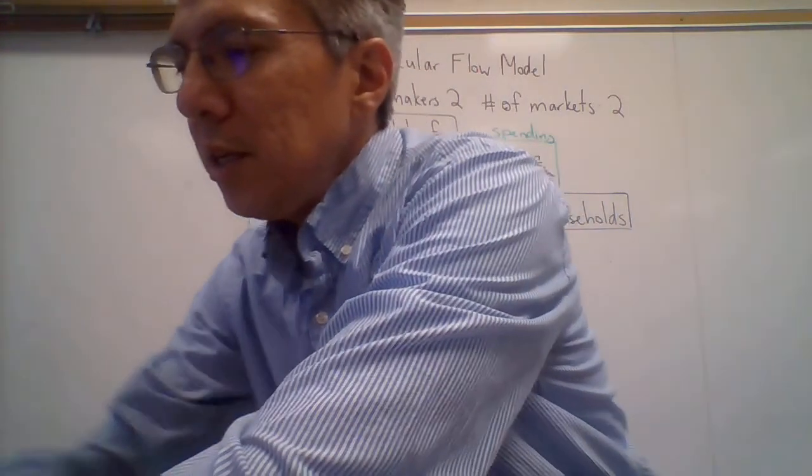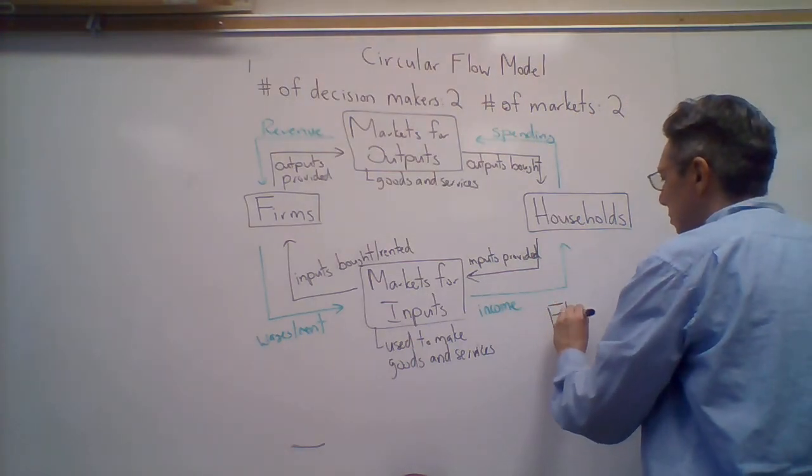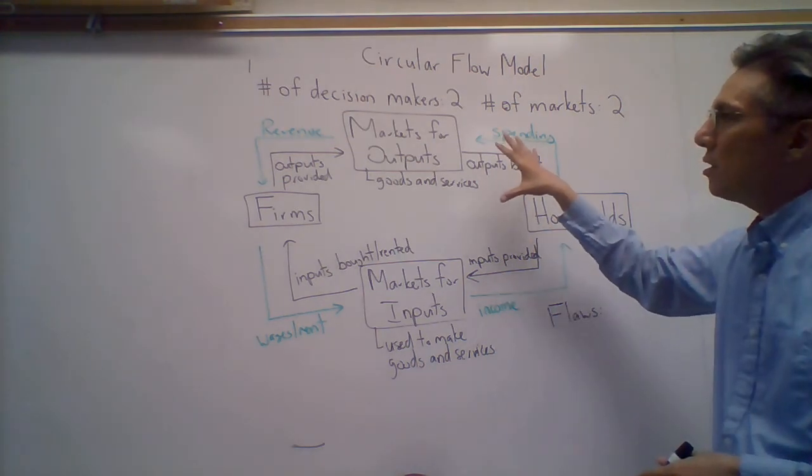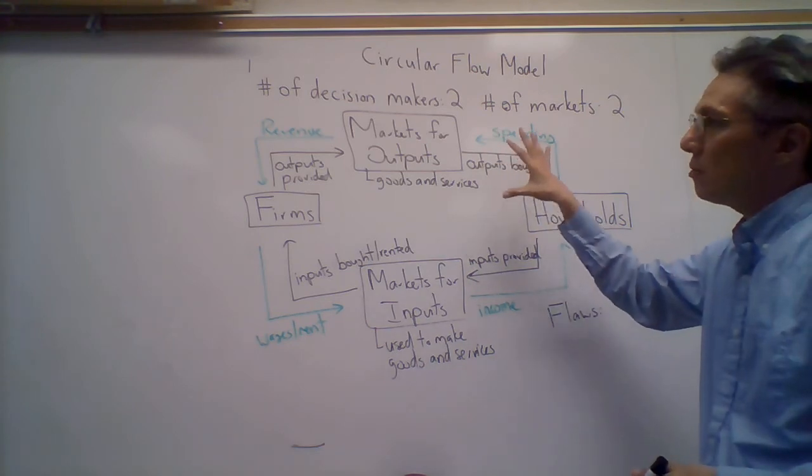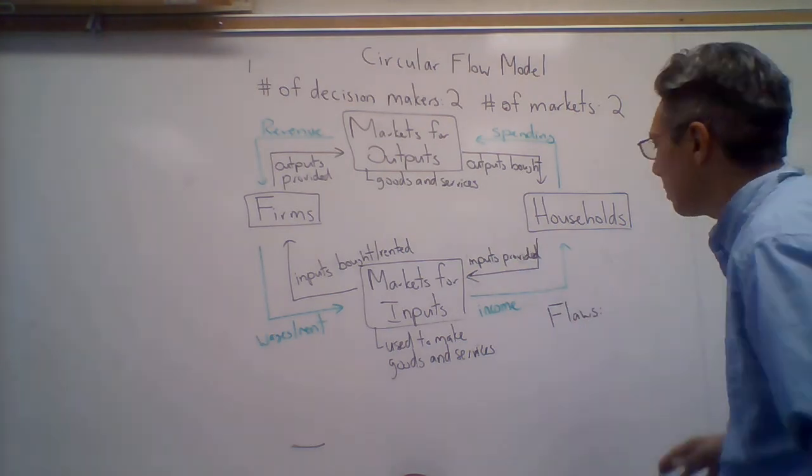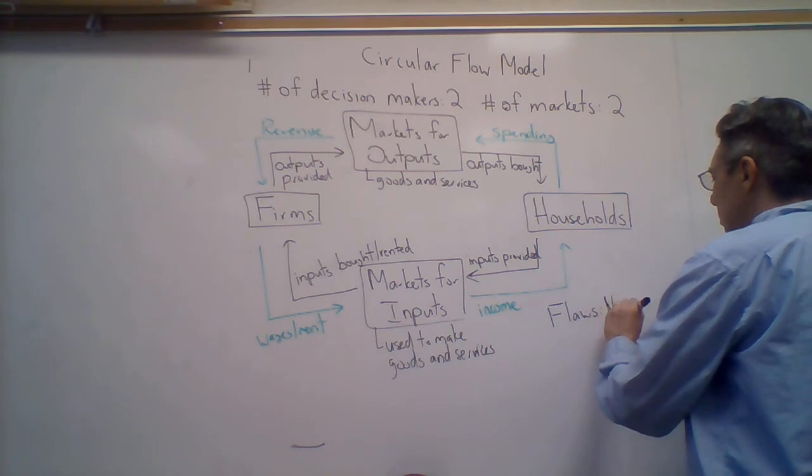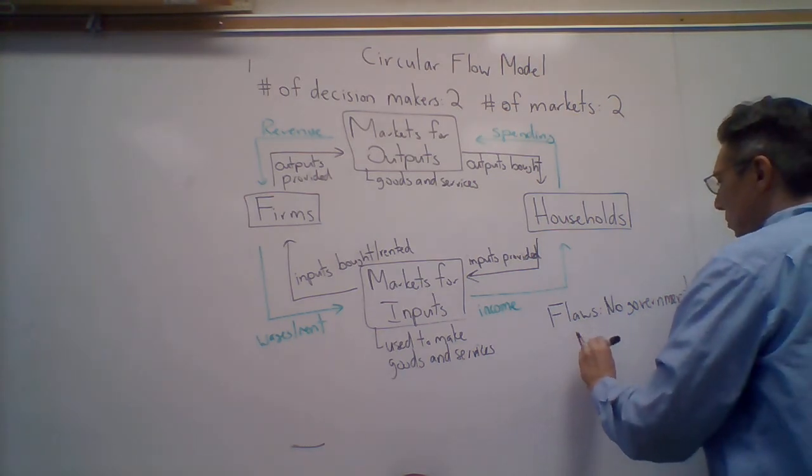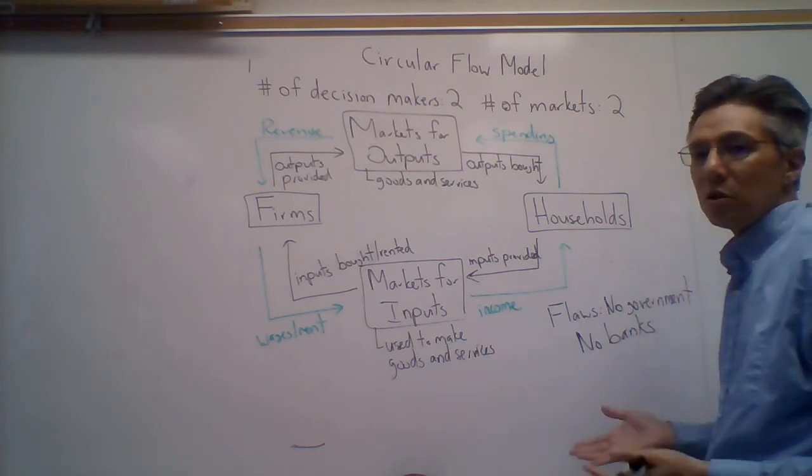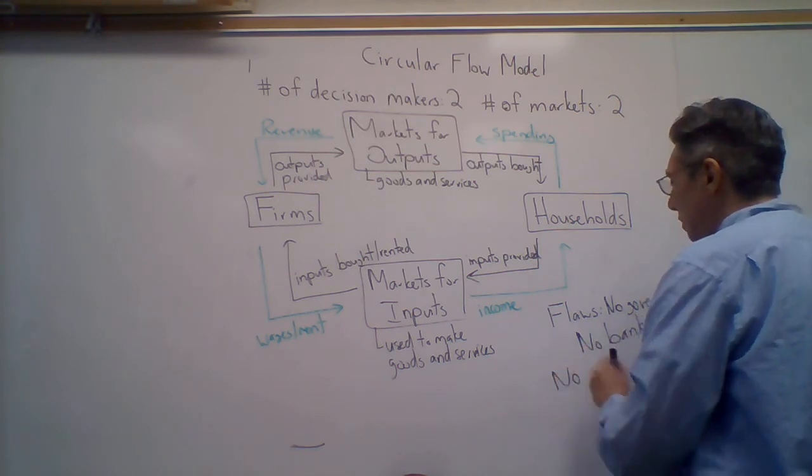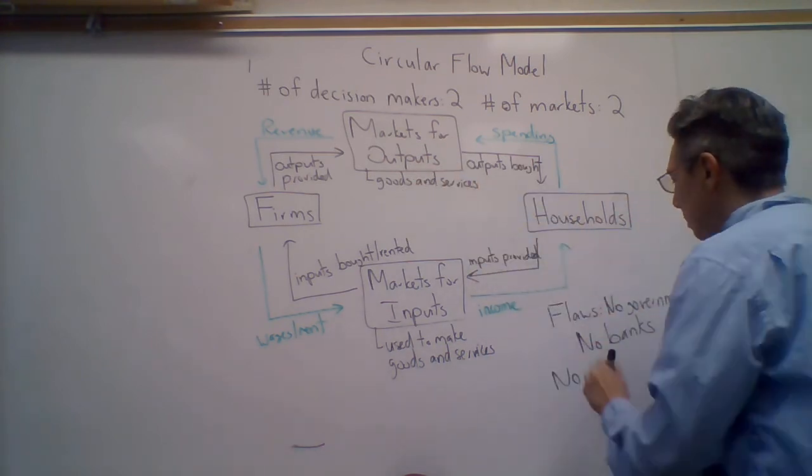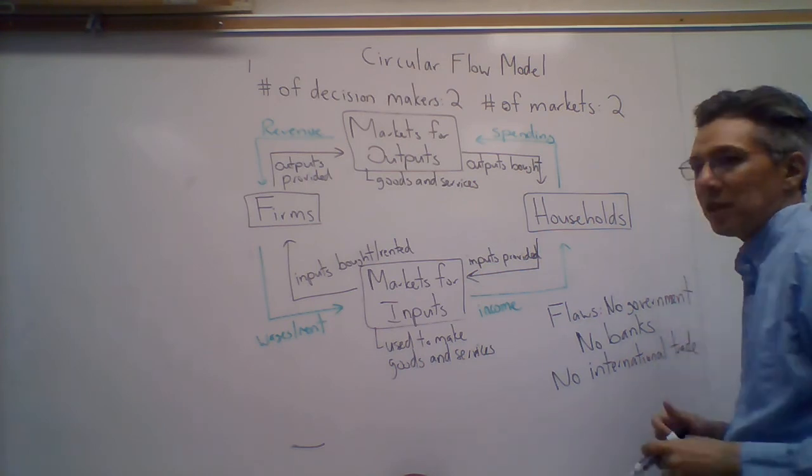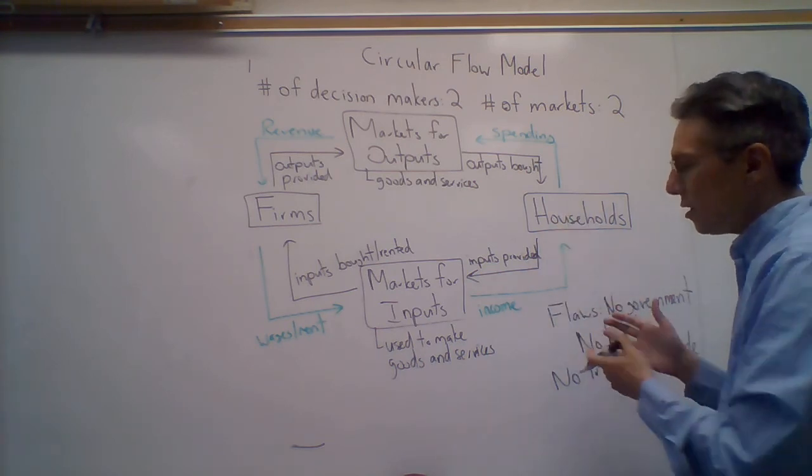Some other things that are important are the flaws. The flaws come from the fact that the model is national in scale. What are some big components of a national economy that are omitted in this model? The flaws are that there is no government, no financial institutions (that is, no banks), and it's basically an economy by itself like an island—there's no international sector. This is the circular flow model and these are the flaws associated with it.